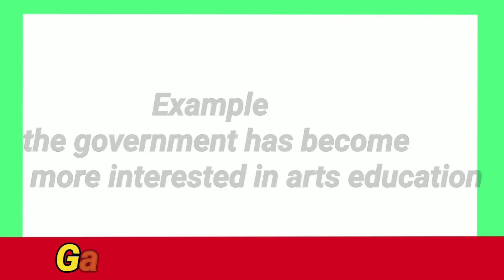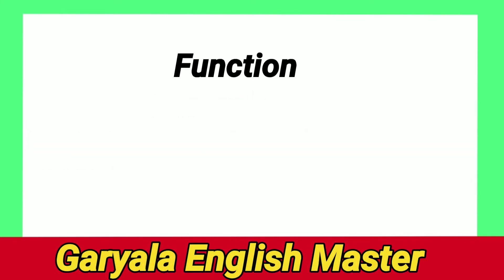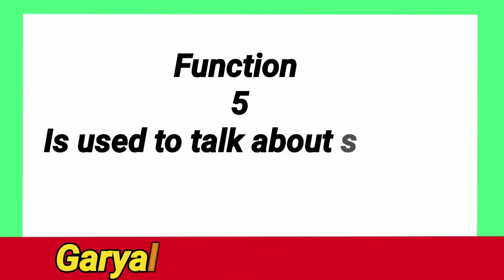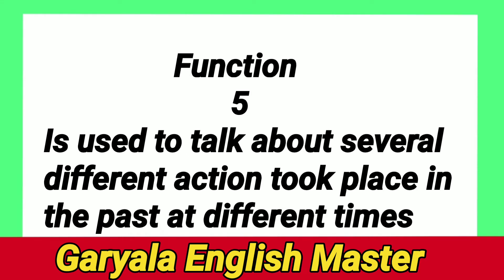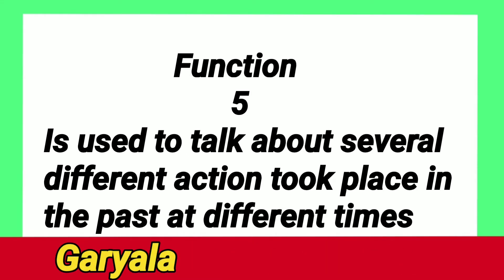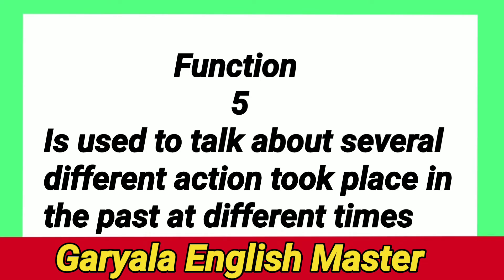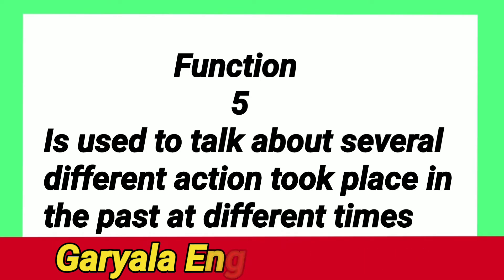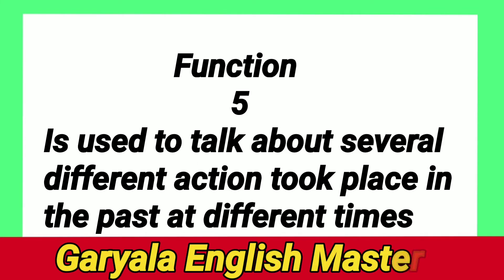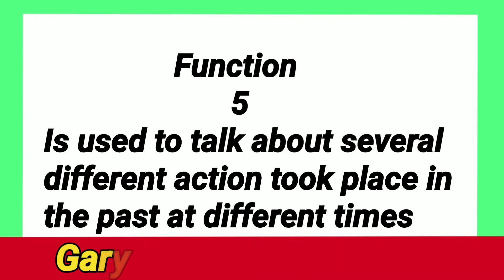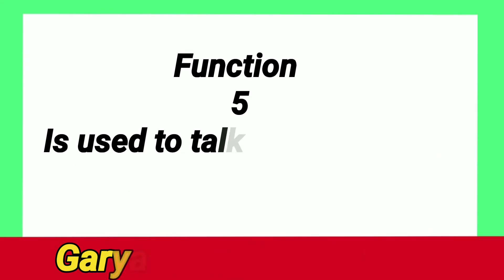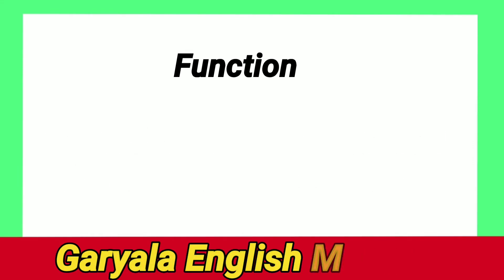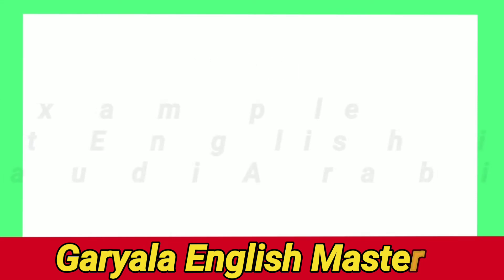Function number five: Present Perfect is used to talk about several different actions that took place in the past at different times. For example, a number of actions may be listed: 'I have seen Karachi, Lahore, Faisalabad, and so on.' You can create your own example.